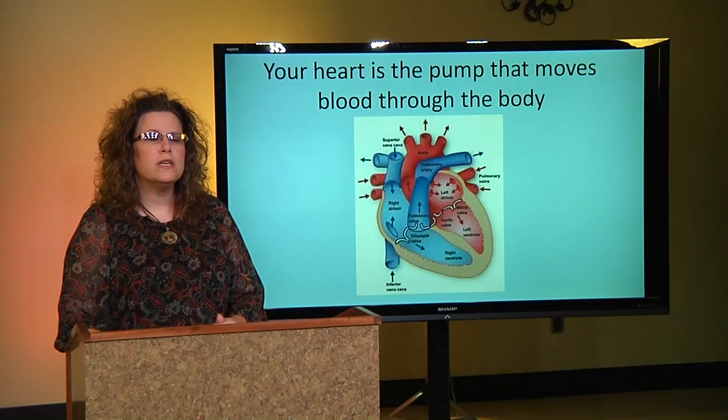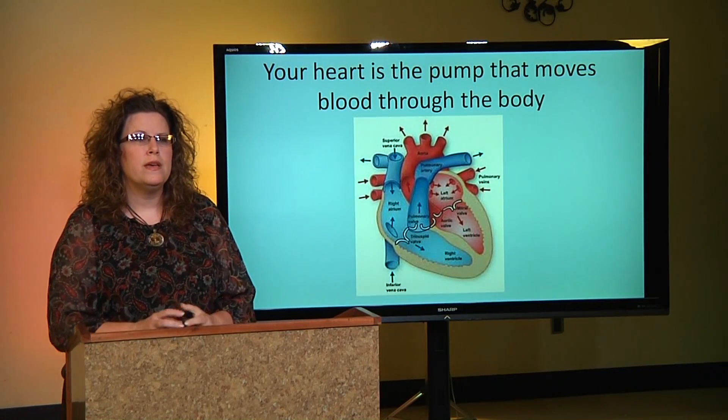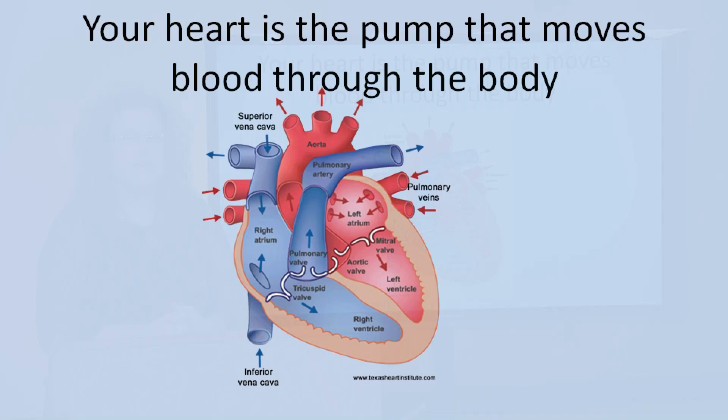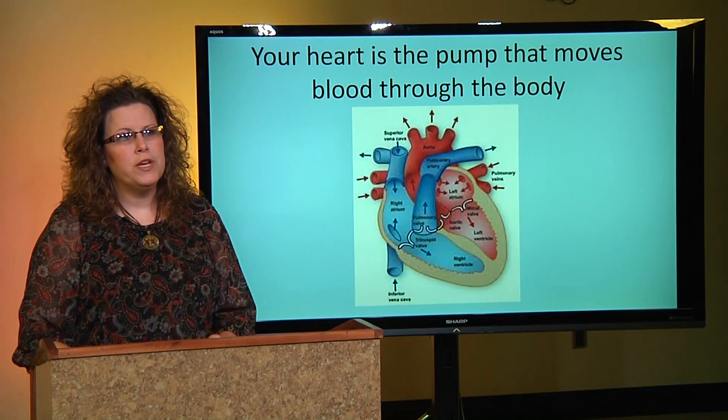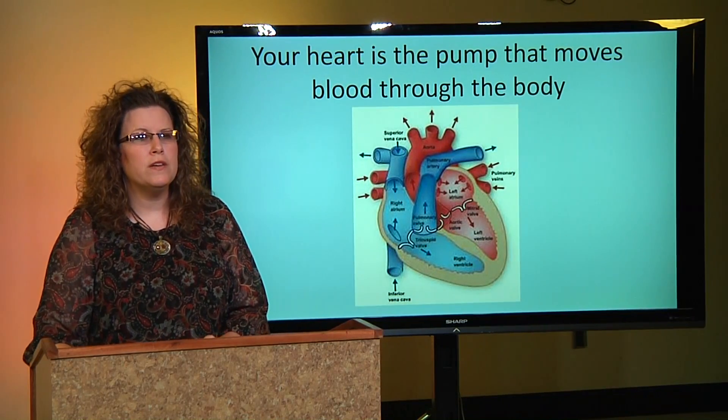As we look and talk about the anatomy of the heart, we understand that the heart is the main pump that moves the blood through the body. To do that, the blood goes through various chambers, atrias, through different valves, different vessels of the heart to get to the lungs, then back to the heart, and out to the body. We're going to talk a little bit about each of those parts of the anatomy.